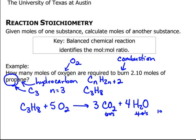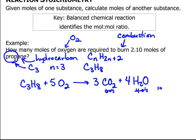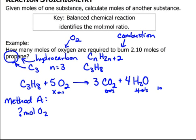Now I use that balanced chemical equation to solve for my answer. I'm going to go through two methods. First, we'll look at Method A. I am looking for moles of O2. This gets easier if I write under the equation what I'm given and what I want to find.